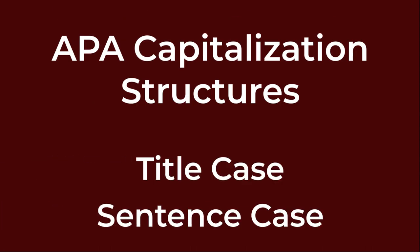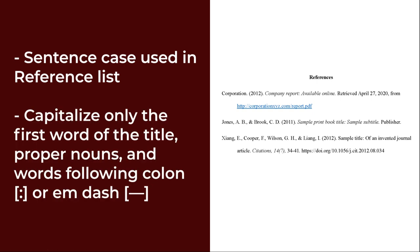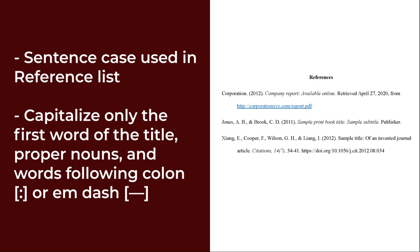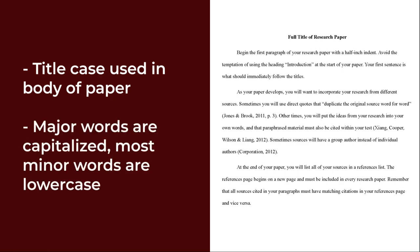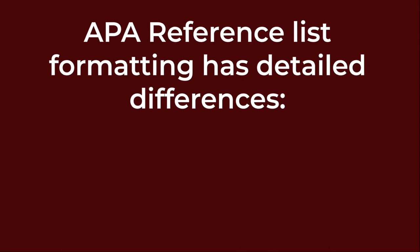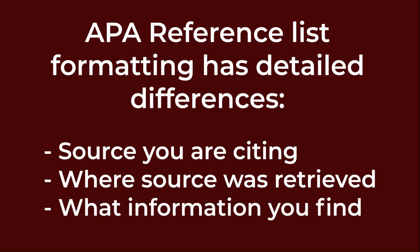APA style uses two types of capitalization structures: title case and sentence case. In reference list entries, sentence case is used. In sentence case, capitalize only the first word of the title, proper nouns, and words following a colon or em dash. Title case is used in the body of your paper — in title case, major words are capitalized and most minor words are lowercase. APA reference list formatting has a lot of detailed differences depending on the type of source you are citing, where you retrieve the source, and the information you are able to find. Because it can be so particular, it is always important to consult a citation guide.